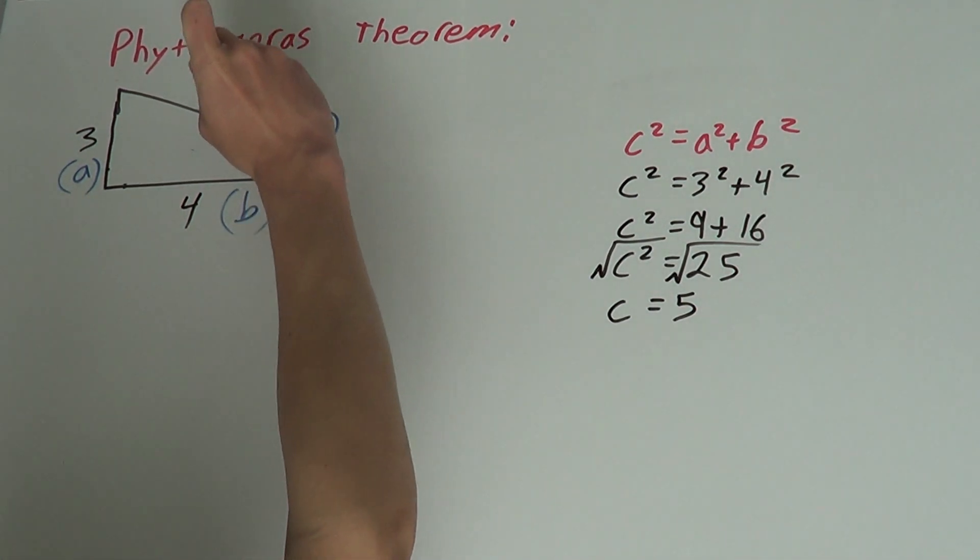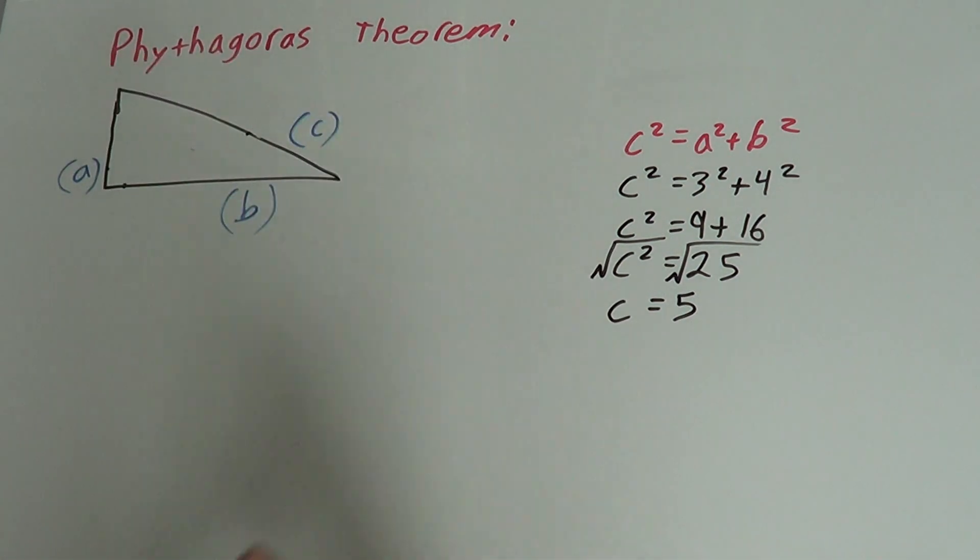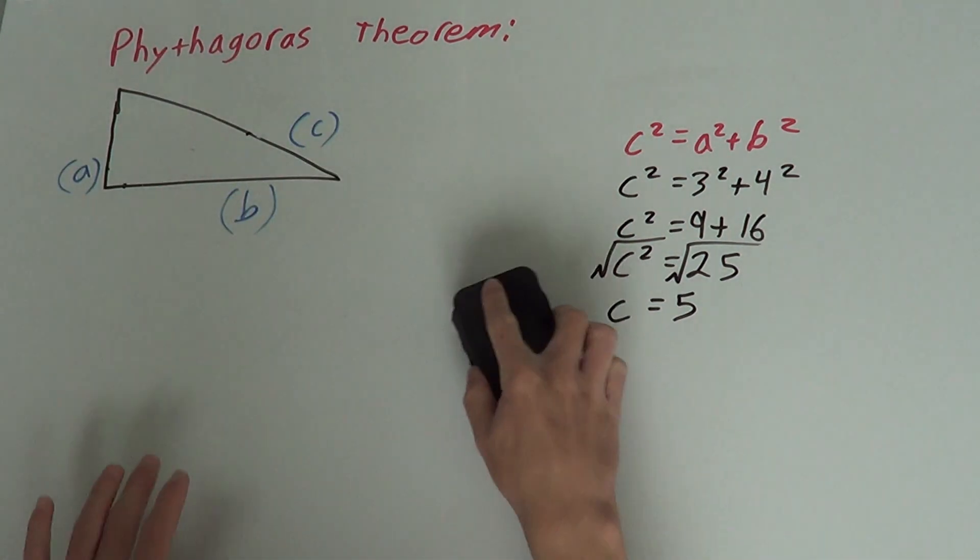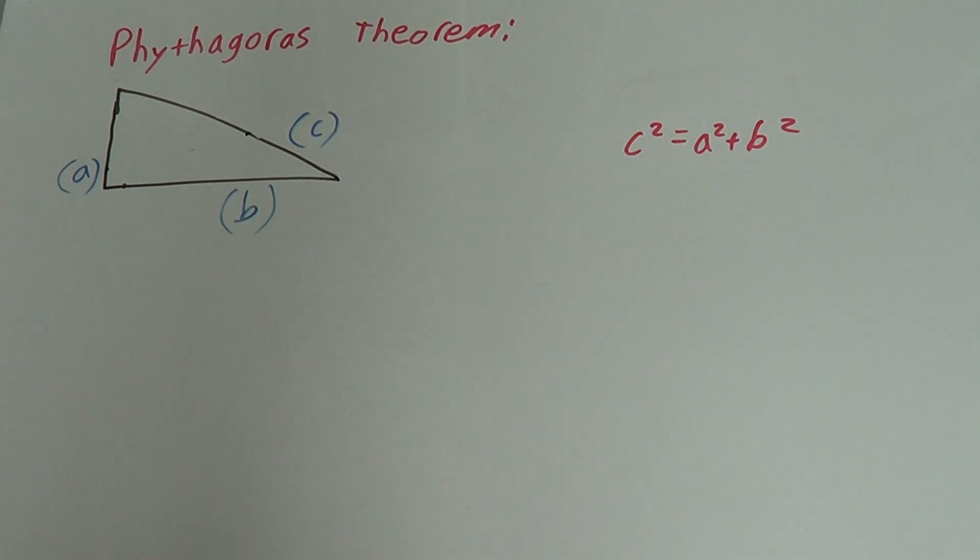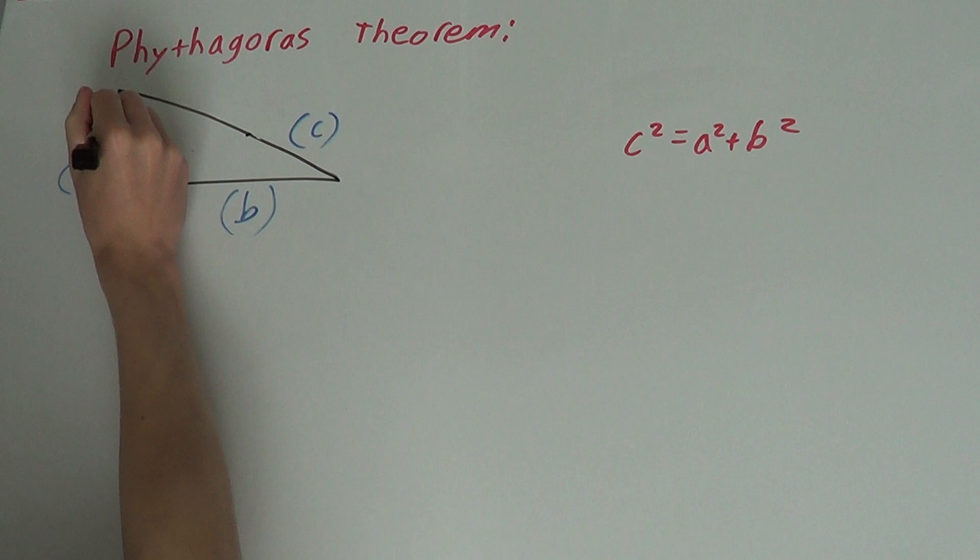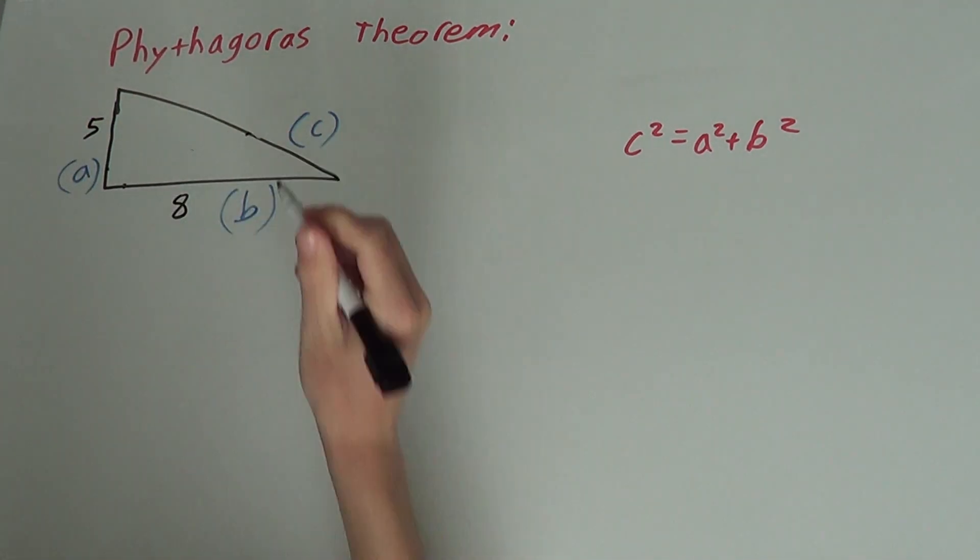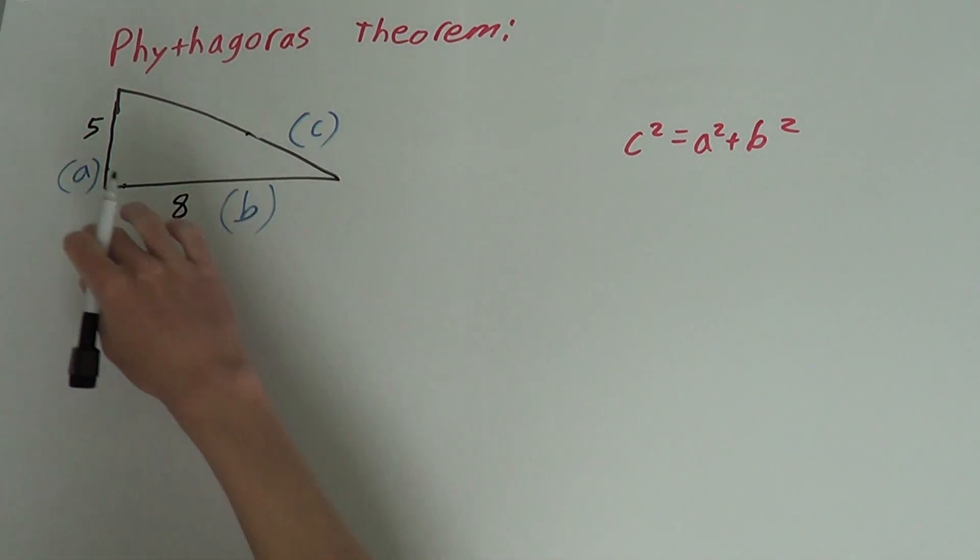We'll look at one more that's slightly harder, just to confirm that you know this. Let me just get this out of the way. Okay, this example, we'll make this side five and this side eight. So, we have our sides labeled.